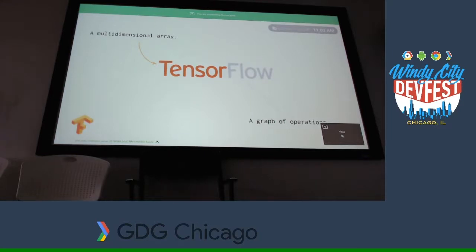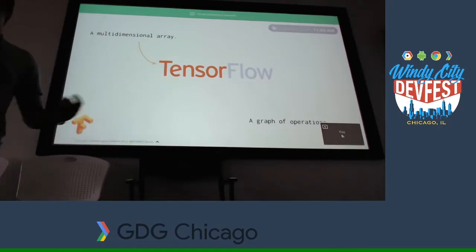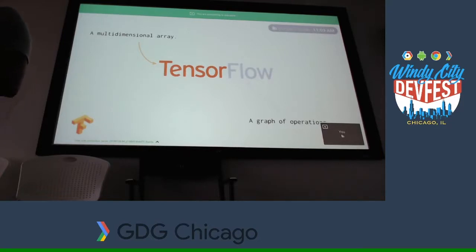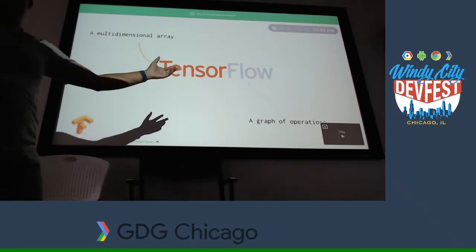Why the name TensorFlow? A tensor is a multidimensional array. Anything you pass to your TensorFlow program — whether it's an image or text — becomes a multidimensional array. The flow is a graph of how operations should be. The biggest thing that makes TensorFlow better than other libraries is its graph flow: you don't write code that executes directly — you write code to create a graph, and then you execute it. Data is your tensor, and flow is your graph.